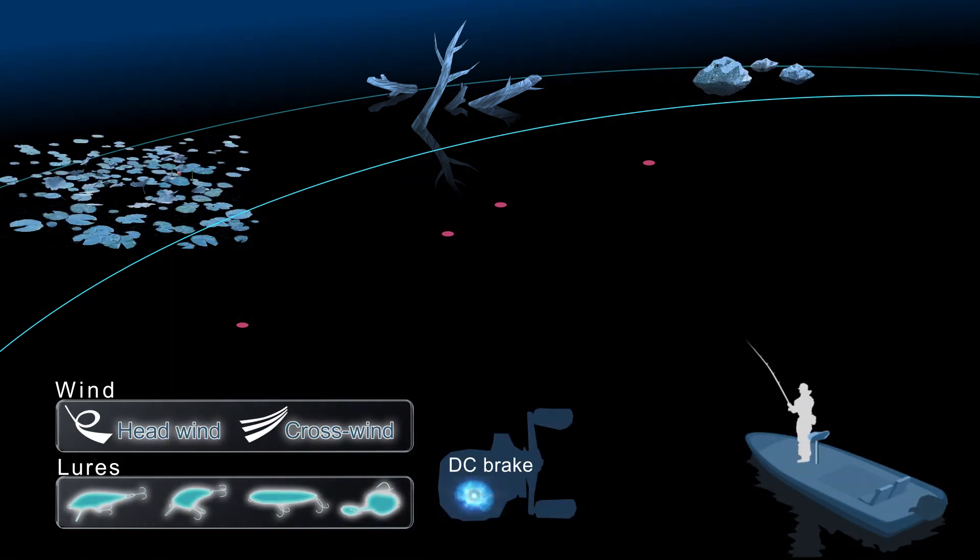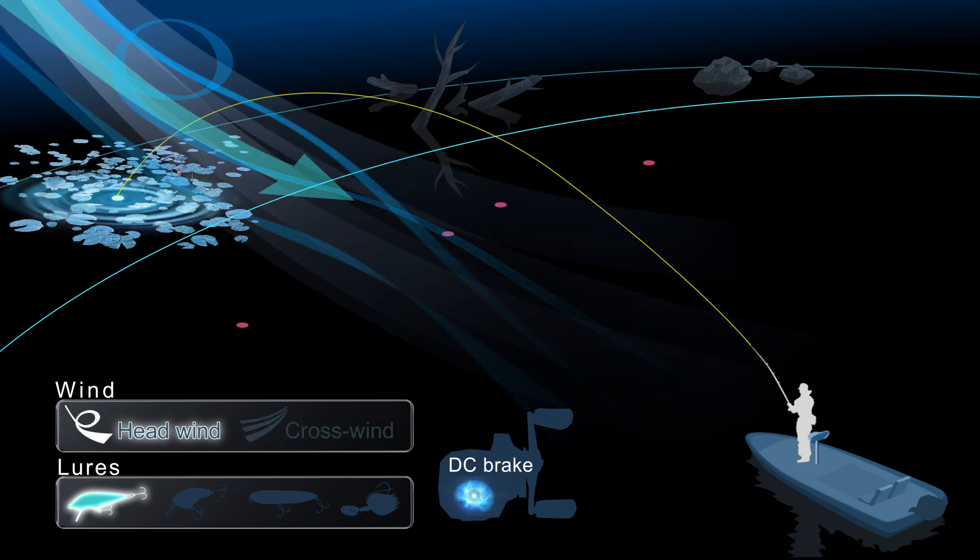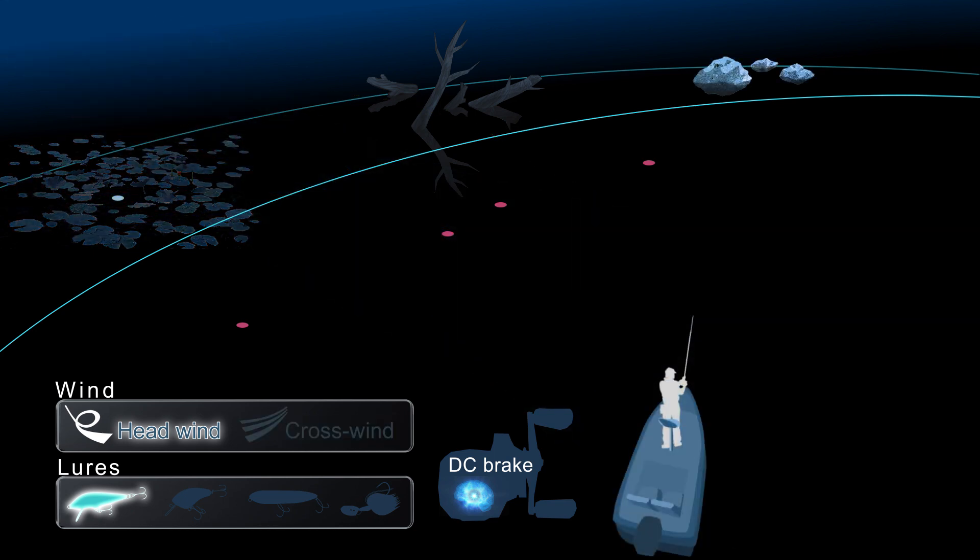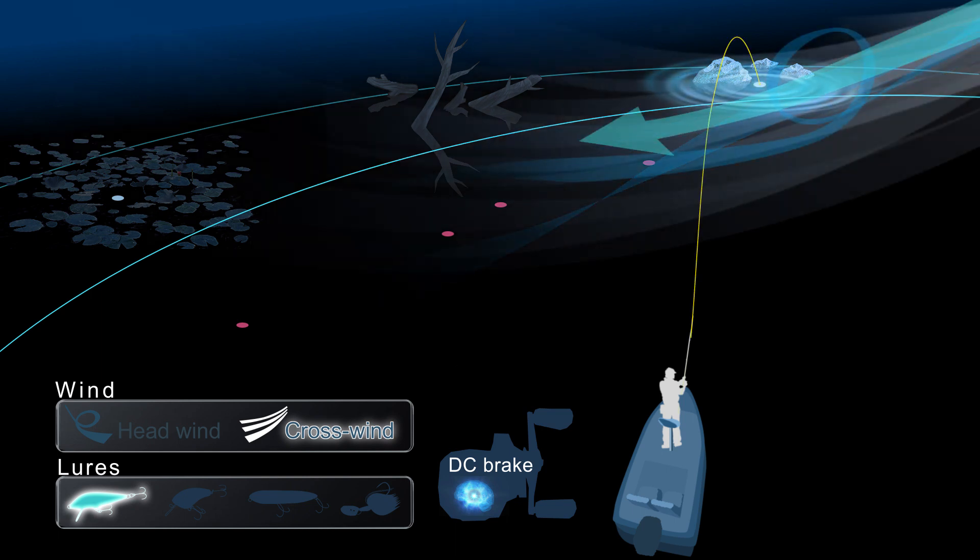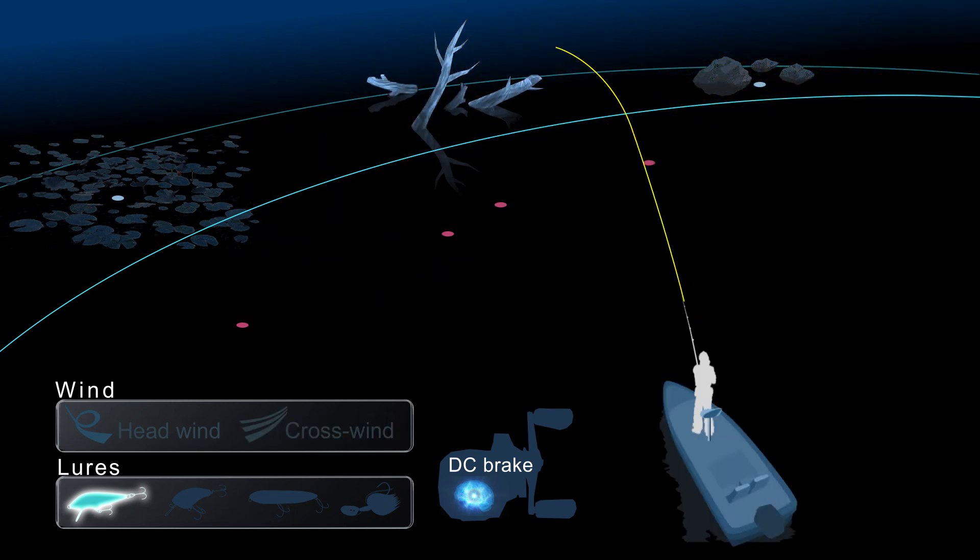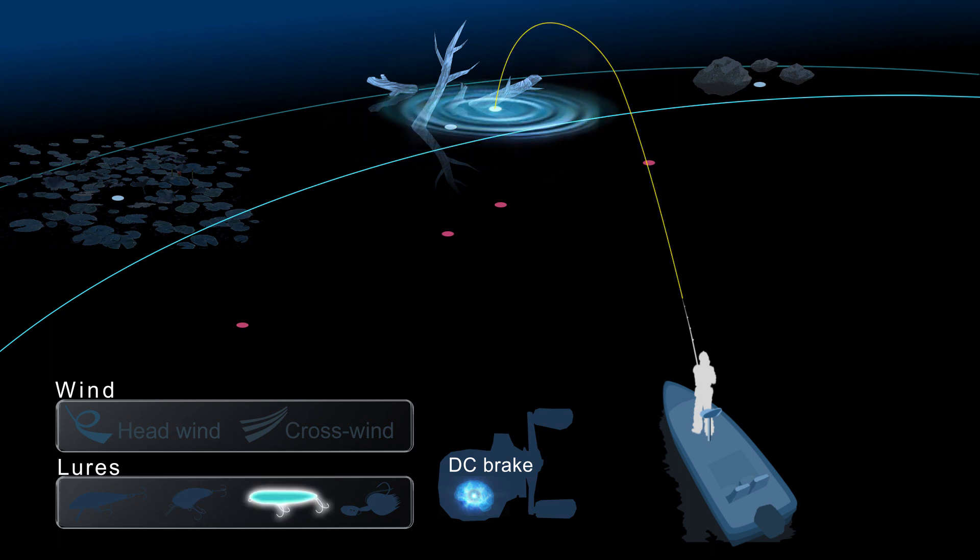However, DC Brake provides trouble-free casting with less manual adjustment regardless of lure or conditions. DC Brake can match any conditions to provide anglers with easy, trouble-free and long distance casting.